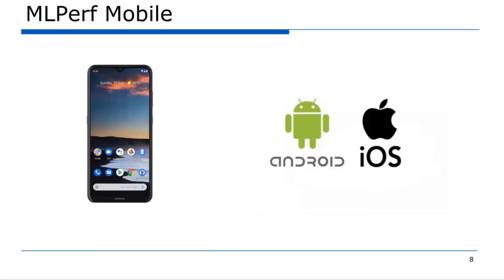From a form factor perspective, mobile is much better defined than edge devices, where you can find anything from a Raspberry Pi all the way up to an A100. Smartphones, by contrast, most of us can agree on: battery powered, fits in your pocket. There's little disagreement about the dimensions and power source a mobile device will use.